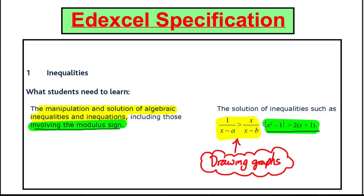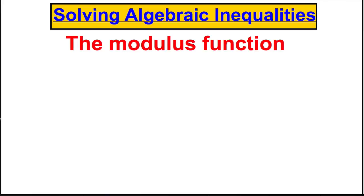For example, the modulus of x squared subtract 1 is bigger than 2 multiplied by x plus 1 — that type of equation. First, I need to talk about what the modulus function is. For those who have done Core 3, this won't be a problem, but if you're coming to FP2 without Core 3, I'll go through it briefly — otherwise, look in my Core 3 playlist.